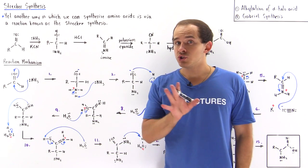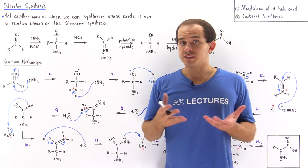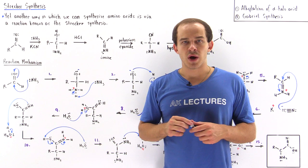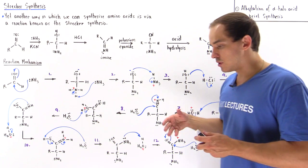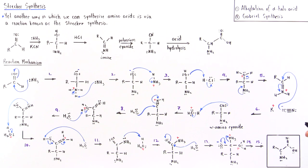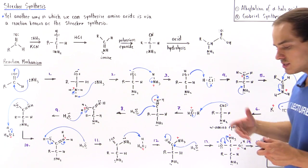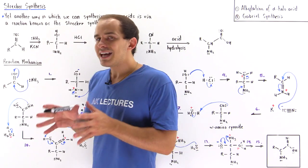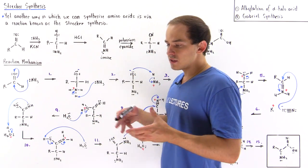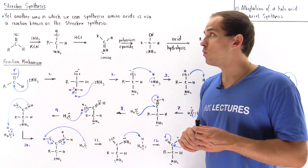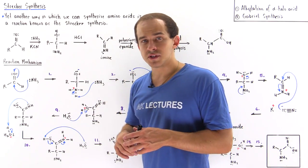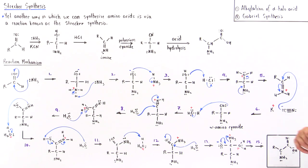Up to this point we discussed two different methods by which we can synthesize amino acids. We examined the alkylation of alpha halo acids and we also discussed the Gabriel synthesis, also known as the Gabriel Malonic Ester synthesis. Now yet another reaction that allows us to synthesize amino acids is the Strecker synthesis, and this is what we're going to discuss in this lecture.